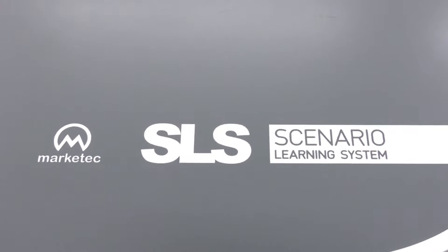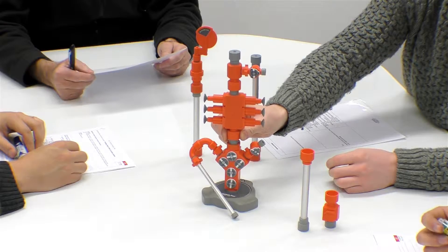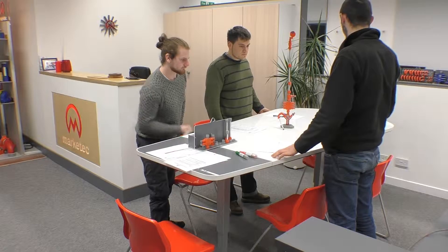The SLS table and supporting components are designed to apply key features of small team learning. For example, people engage and participate better in an exercise when standing up, especially where role play is involved.